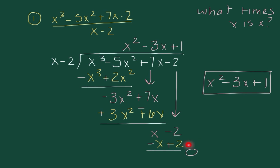Our remainder is 0, so I don't need to write that anywhere. To recap the process: I set up my problem, I make sure both polynomials are in descending order and they're not missing any terms. I think what times x is x cubed — once I figure that out, I'm distributing, then subtracting by changing our signs, and combining like terms. Bring down our next term, then ask what times x is negative 3x squared — distribute, subtract by changing signs, combine like terms, bring down the next term, and so forth. Our answer: x squared minus 3x plus 1.